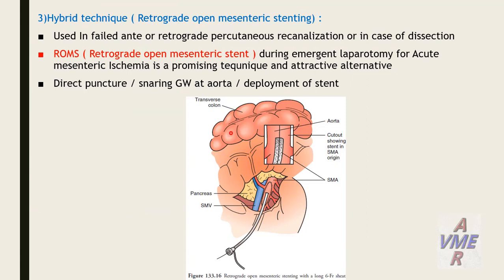Hybrid technique combines open and endovascular approaches. Retrograde open mesenteric stenting is used in failed antegrade or retrograde percutaneous revascularization or in cases of dissection. Retrograde open mesenteric stenting during emergent laparotomy for acute mesenteric ischemia is a promising technique and attractive alternative, involving retrograde guidewire passage and antegrade deployment of the stent.